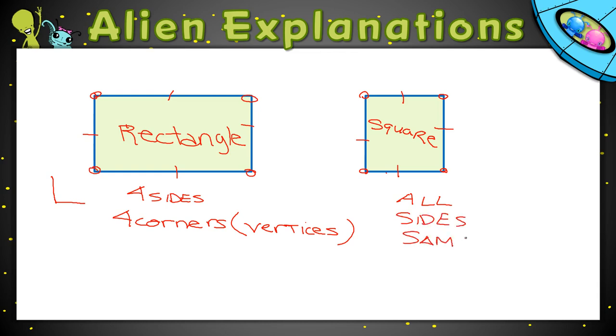So a square is sometimes called a special rectangle. It's a rectangle but with all sides the same length.